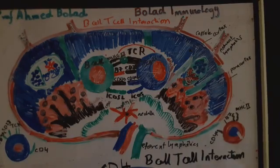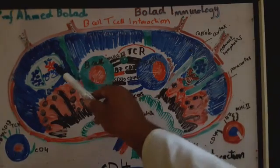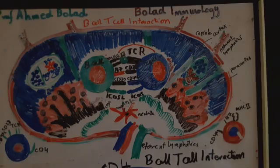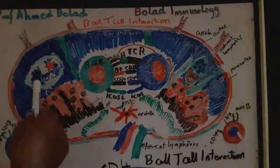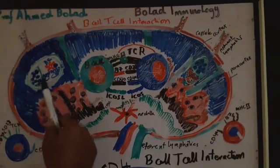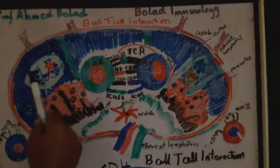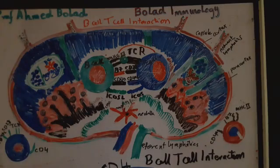Activated B-cells form a structure known as the germinal center, where B-lymphocytes undergo intense proliferation. This area of intense B-cell proliferation is known as the dark zone of the germinal center, where B-cells undergo clonal expansion and somatic hypermutation.